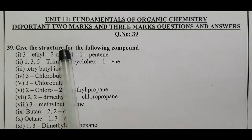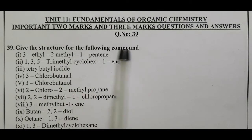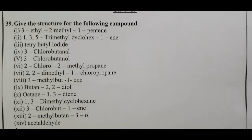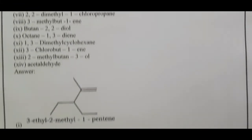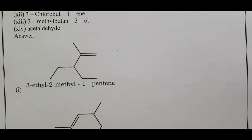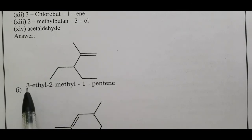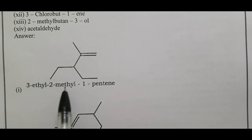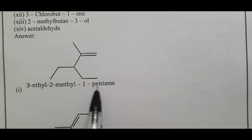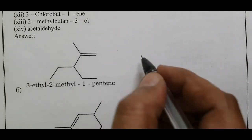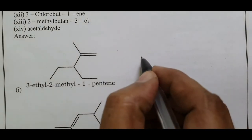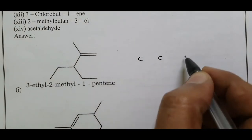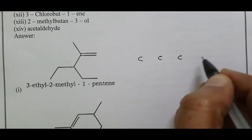Give the structure for the following compound. Compound number one: 3-ethyl-2-methyl-1-pentene. The root word ends with 'ene.' Look at the structure with carbon — you can see 5 carbons in the main chain.